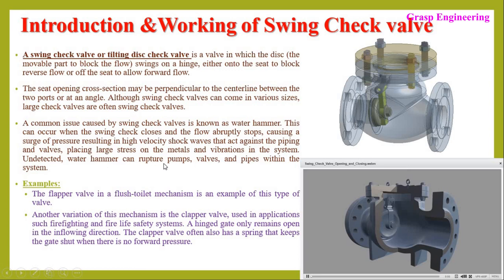Undetected water hammer can rupture the pumps, valves, and pipes within the system. When designing this valve we should think about water hammer — it can occur when the swing check closes and the flow abruptly stops, resulting in vibration at the hinge portion and stresses on the metal parts. An example is the flapper valve in the flush toilet mechanism, which is one example of a swing check valve.